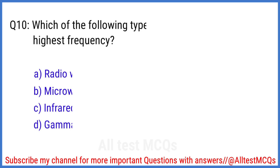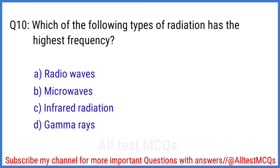Q10. Which of the following types of radiation has the highest frequency? The correct answer is option D. Gamma rays.